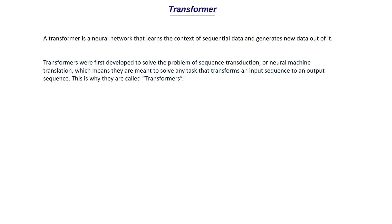Transformers were first developed to solve the problem of sequence transduction. Sequence transduction is sequence-to-sequence modeling where you give a sequence of data as input and the model generates another sequence as output. This is also called neural machine translation — they are meant to solve any task that transforms an input sequence to an output sequence. This is why they are called transformers.